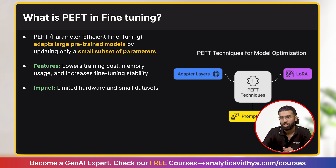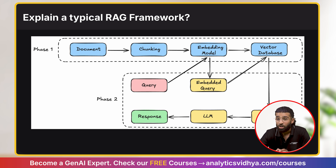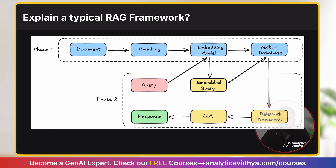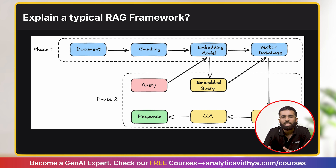The fourth question is: explain a typical RAG framework. This is another favorite question of any hiring manager. Begin by explaining what RAG is and its two key components — the retriever and the generator. You should be able to clearly explain the entire architecture and workflow of a RAG framework, highlighting key features such as enhancing relevance, accuracy, and contextual understanding, along with its advantages and disadvantages.